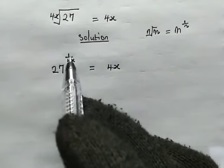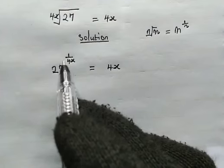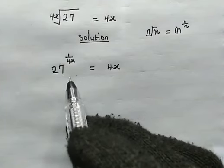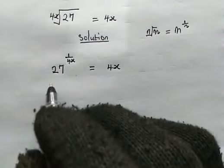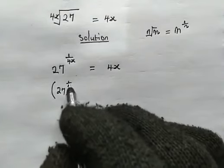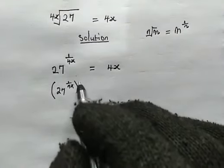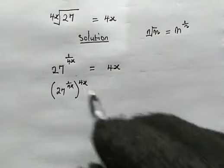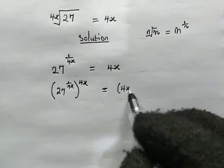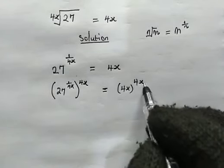Now to get rid of this power here, 1 over 4x, we shall raise both sides of this equation to the power of 4x. So from here we have 27 to the power of 1 over 4x, in bracket, raise power of 4x. This is equal to, from the right hand side, 4x to the power of 4x.